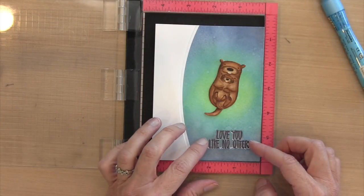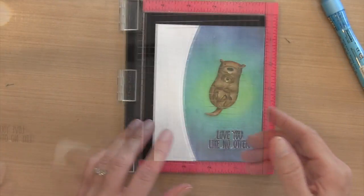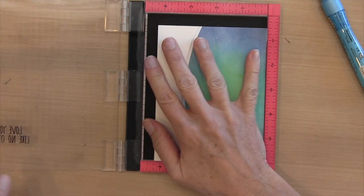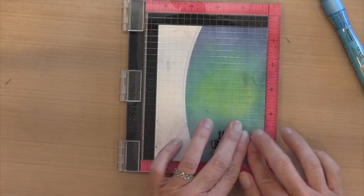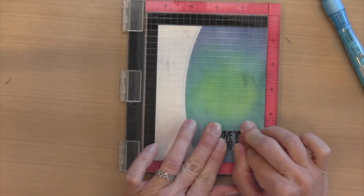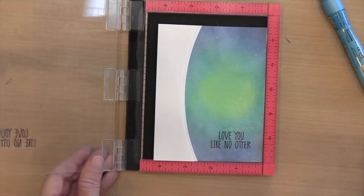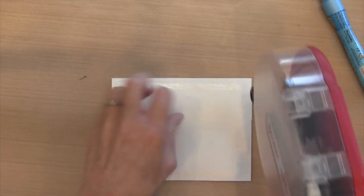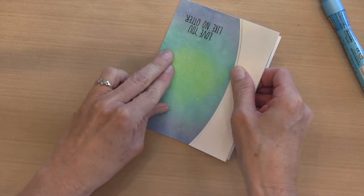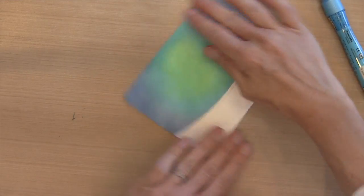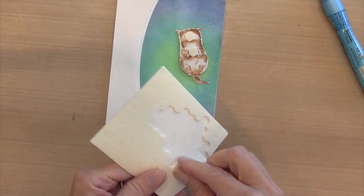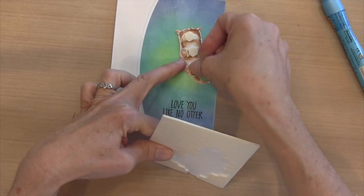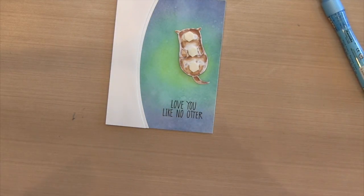I'll do my sentiment. I'm going to use the MISTI to make sure I get it right. I'm just going to ink it up with some Hero Arts black ink and stamp it right there in the blue area. Sometimes it's hard to decide if you're going to put your sentiment right on your background or add something that's been cut out. In this case, I decided just to add it straight on the background.